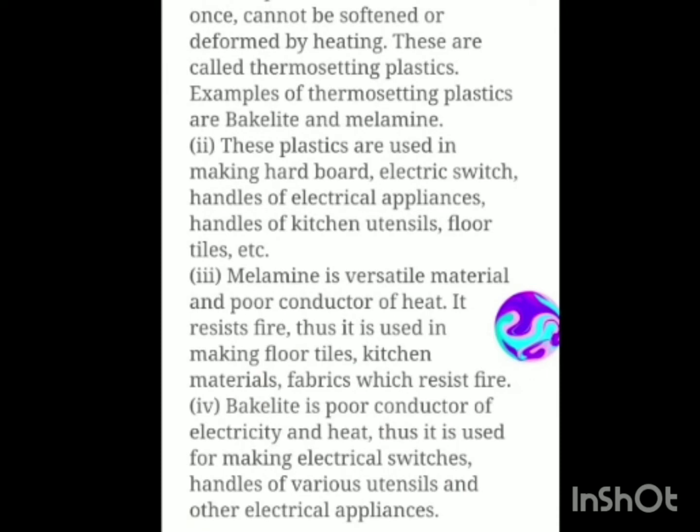Now comes thermosetting plastics. Such plastics which, once moulded, cannot be softened or deformed by heating are called thermosetting plastics. Take the example of a cooker handle — it is made of thermosetting plastic, and if you apply heat or hot water it will not bend; it will not be affected by the heat. This type is again divided into two parts: bakelite and melamine. Bakelite and melamine are used in making hardboards, electric switches, handles of electric appliances, handles of kitchen utensils, floors, etc.